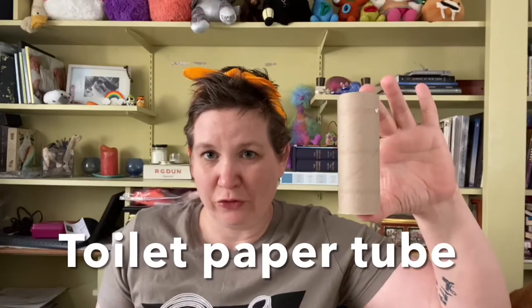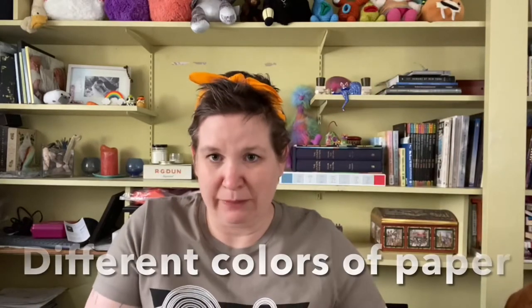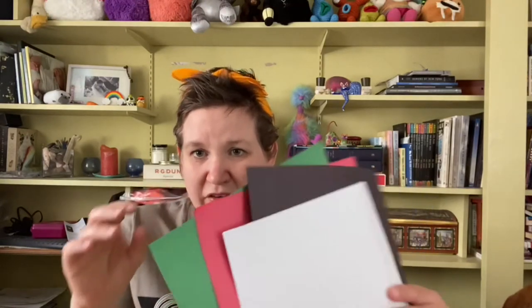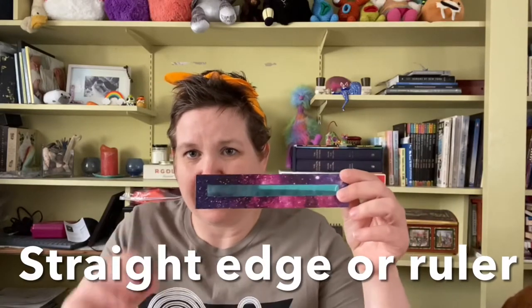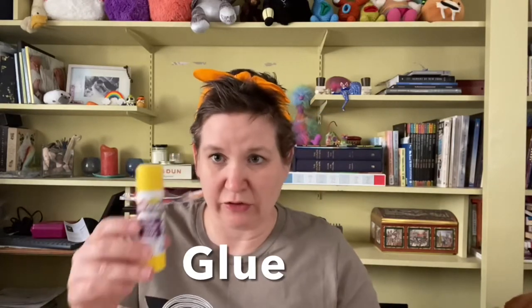In order to make this frog, you will need a toilet paper tube, some paper in different colors—green, red, black, and white. If you don't have colored paper, you can use white paper and color it with a marker or crayon. You'll need some kind of straight edge or ruler, a pair of scissors, a glue stick, and a pen and pencil. So grab these materials and let's get started.